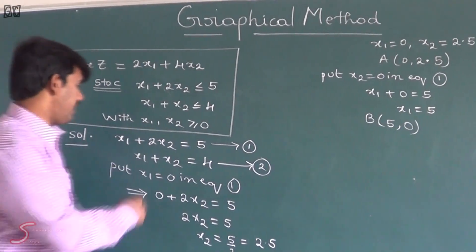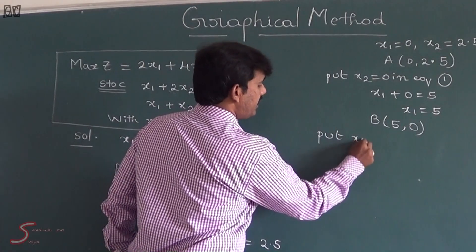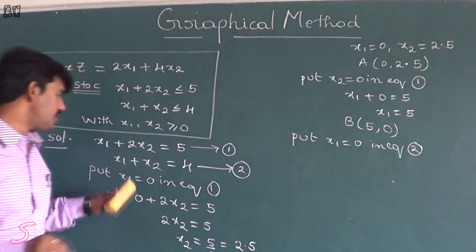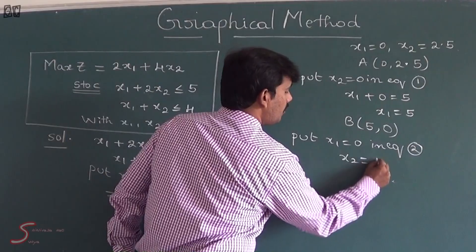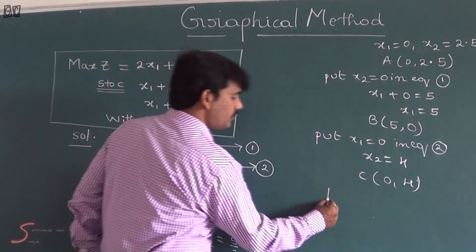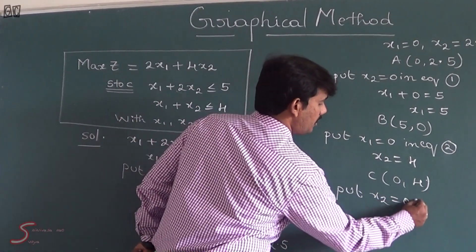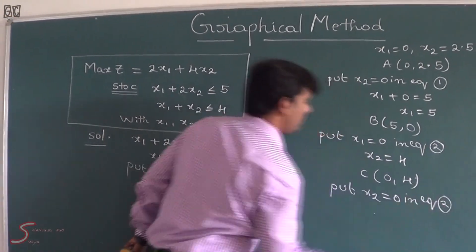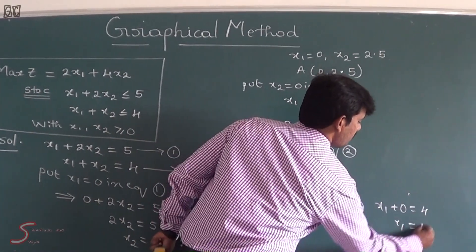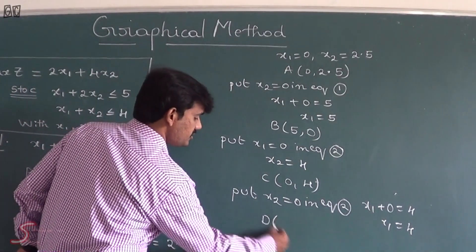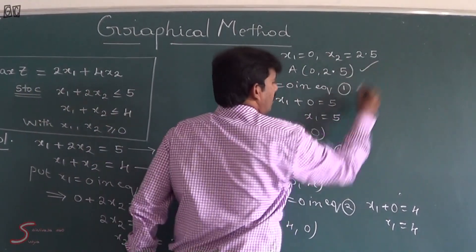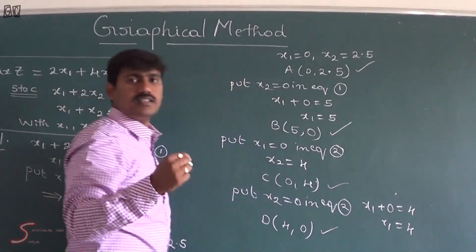Now we will go on to the second equation. Put x1 equal to 0 in Equation 2: we got x2 equal to 4. We have a point C, that is (0, 4). If I put x2 equal to 0 in Equation 2, we got x1 plus 0 equal to 4, so x1 equal to 4. Hence we have one more point D: (4, 0). So AB points are for the first equation and CD points are for the second equation.